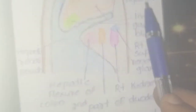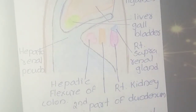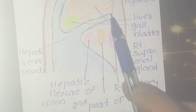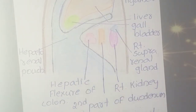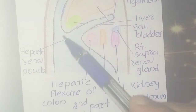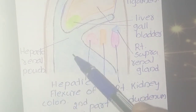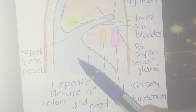For the superior relation, it is bounded by the inferior layer of the coronary ligament, which we can see here. On the inferior aspect, it opens into the general peritoneal cavity.